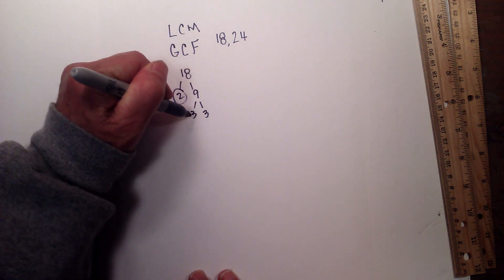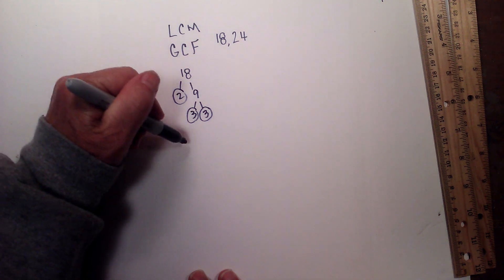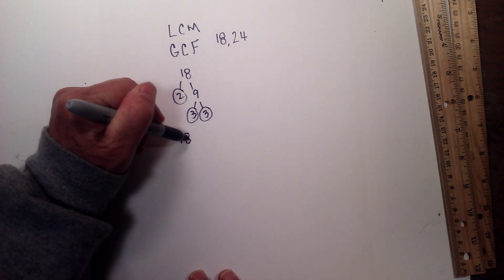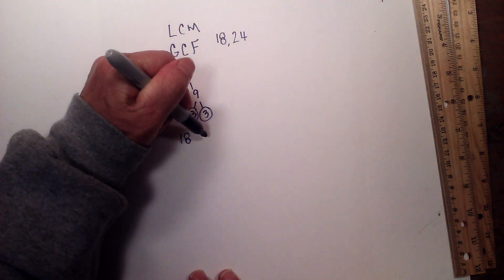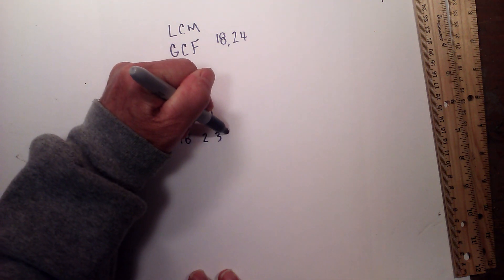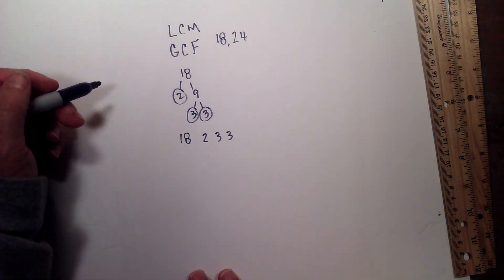So 18, the prime factors that multiply together to equal 18 are 2, 3, and 3. We will use this in just a moment to find the LCM. Next, let's do a factor tree for 24.